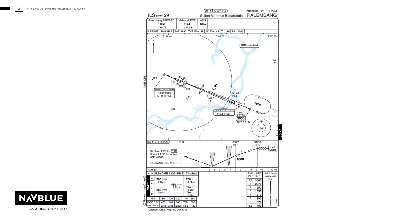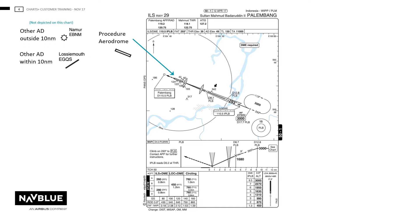We will now look at the different symbols and how NAVBLUE present them on the IAC chart. The procedure airdrome is shown with the correct runway alignment. Airdromes outside the 10 nautical mile circle will be shown as a cog with a name and ICAO code. Airdromes within will be shown with the runway alignment, name and ICAO code.